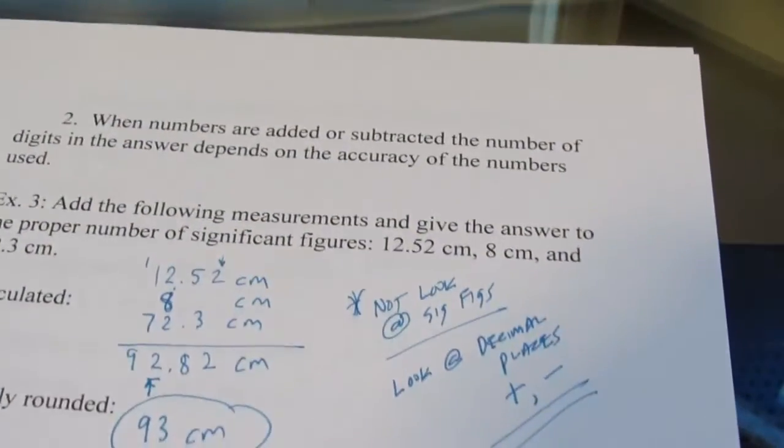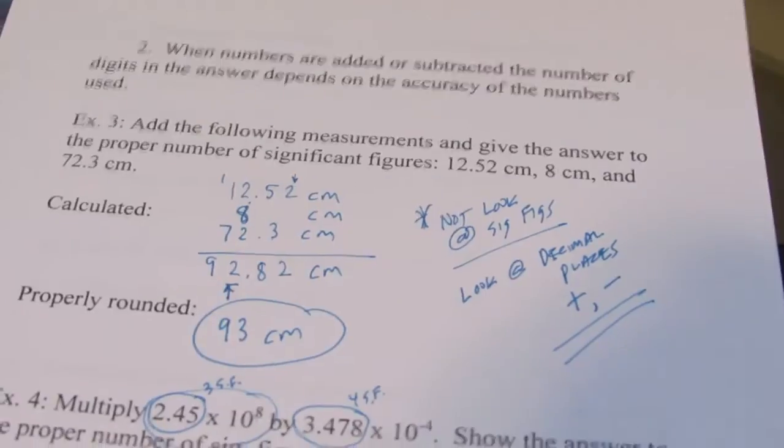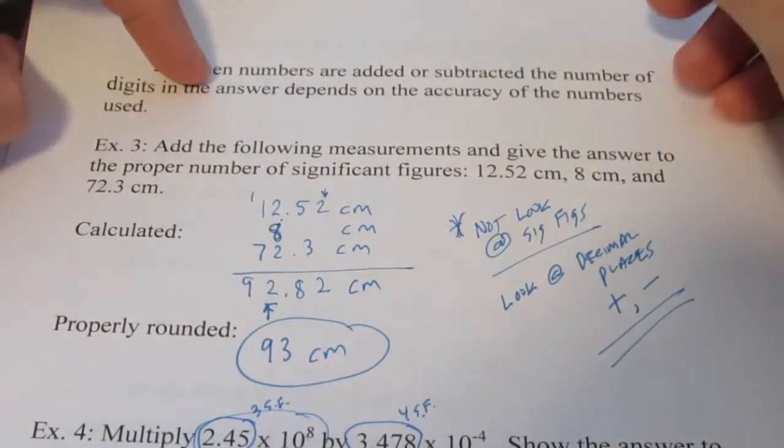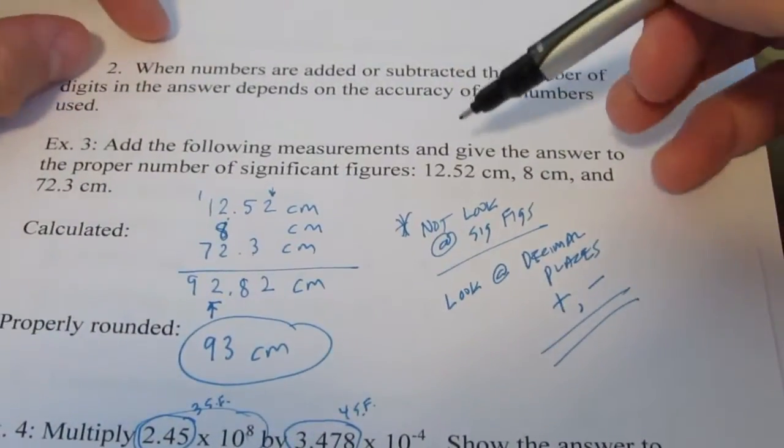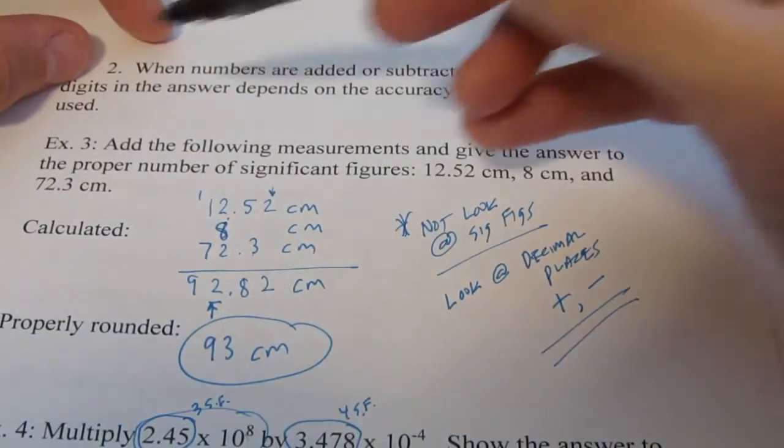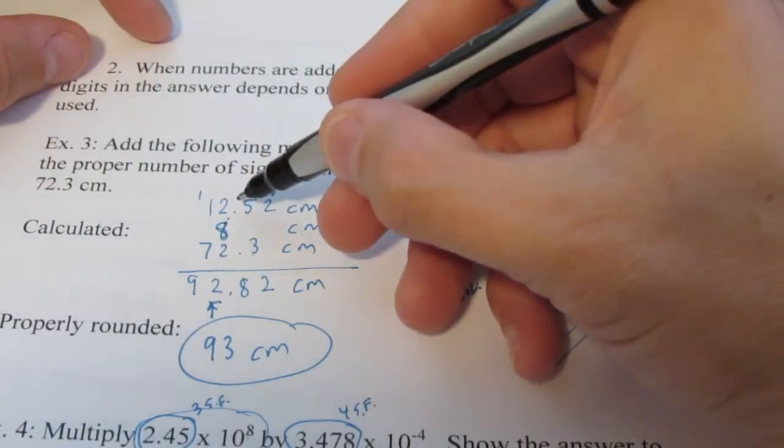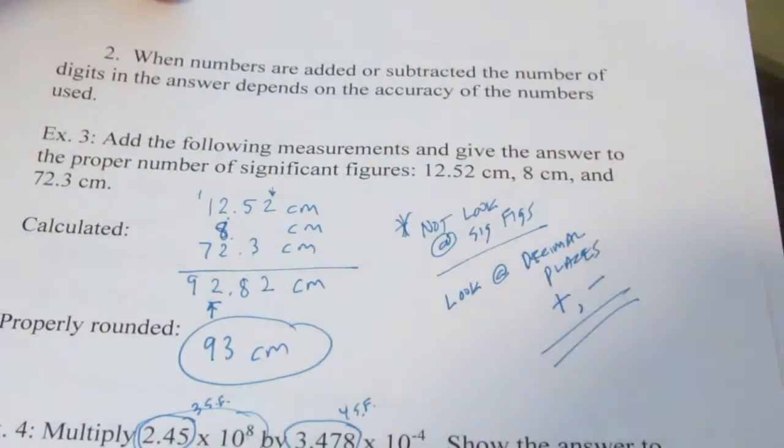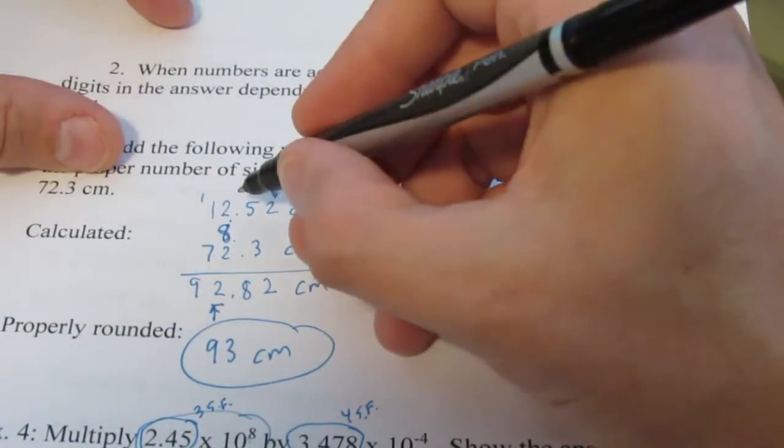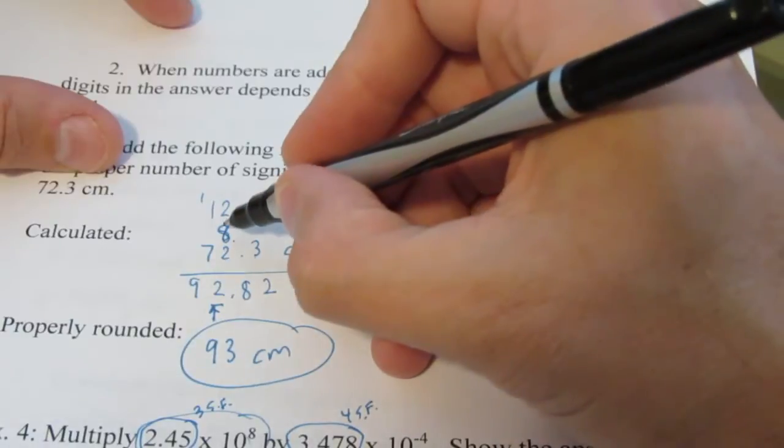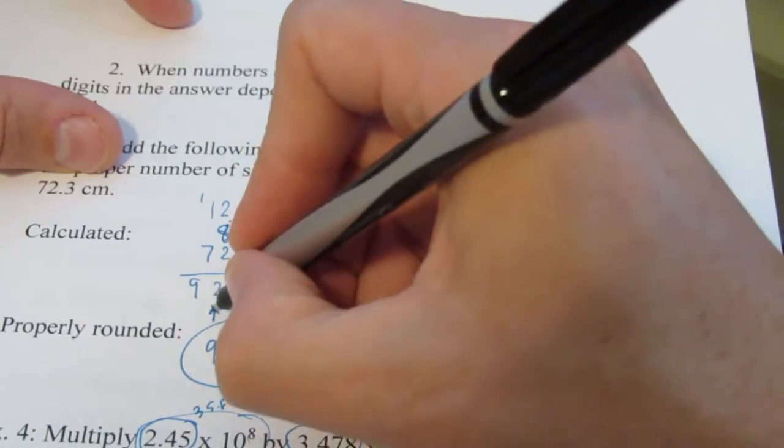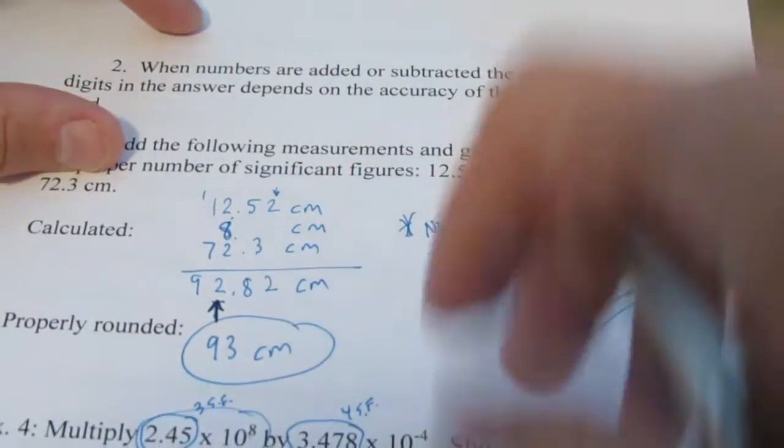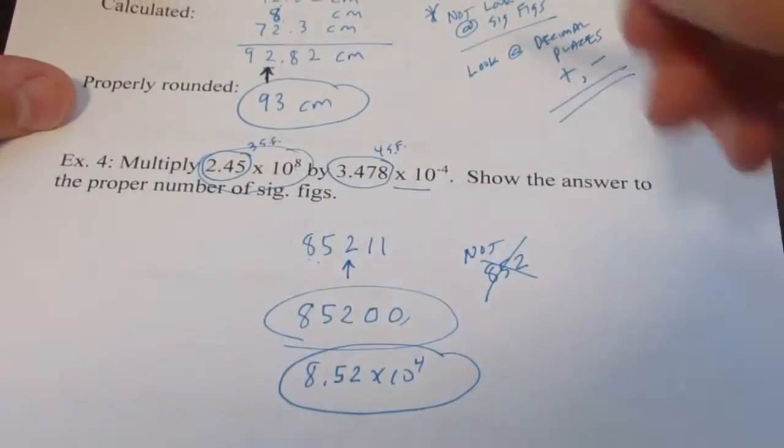When you add numbers together, remember, you look at decimal places. So if I have 12.52 centimeters, 8 centimeters, and 72.3, I like to line the decimals up when I get my number through addition. Or if I'm subtracting, then I take a look at my decimal places. This is to the nearest hundredth, nearest whole number, nearest tenth. My least accurate is to my nearest whole number. So I have to round that to the nearest whole number, which turns out to be 93. We did example four. You might want to review the video to see me do that again if you're unsure.